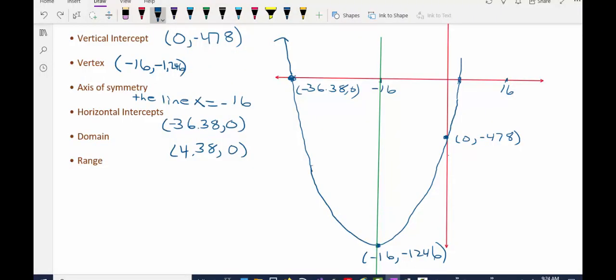So now it's just a matter of extending my graph and my parabola and labeling that point, which represents my second horizontal intercept, 4.38 comma 0.